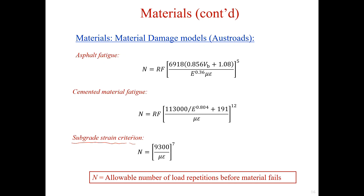Among these formulas, N is the allowable number of load repetitions before the material fails. We also learned the physical meaning of other parameters in the previous slide, so I won't elaborate further here.